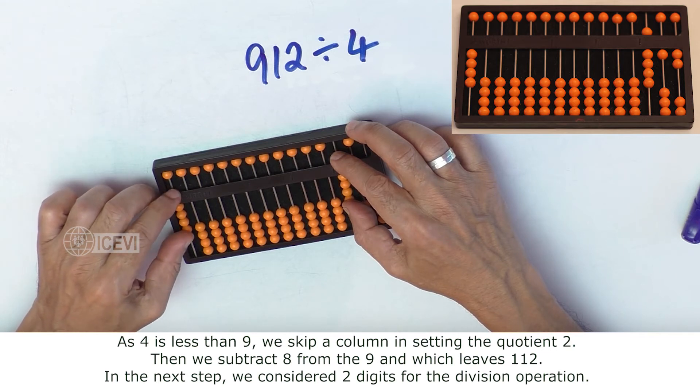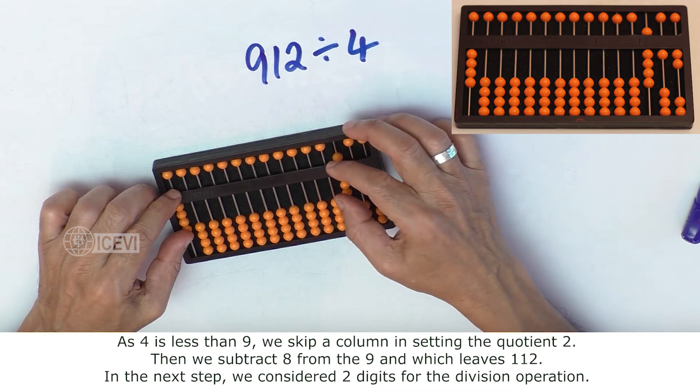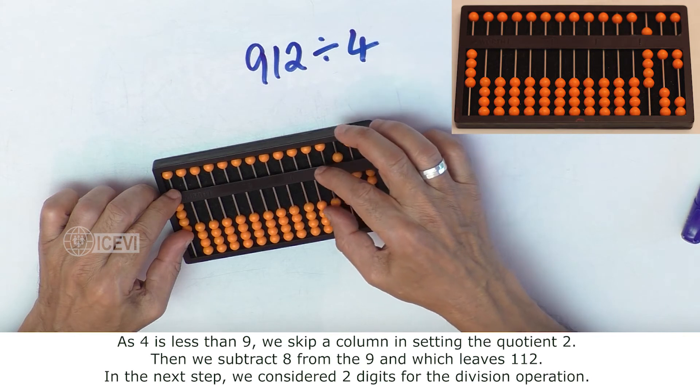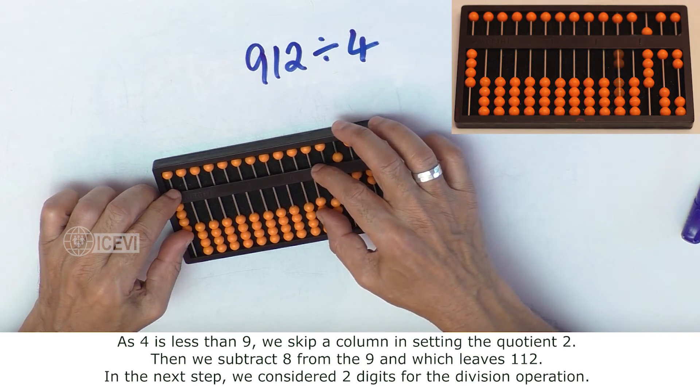As 4 is less than 9, we skip a column in setting the quotient. So we skip a column to the left of the 9 and set the quotient there.